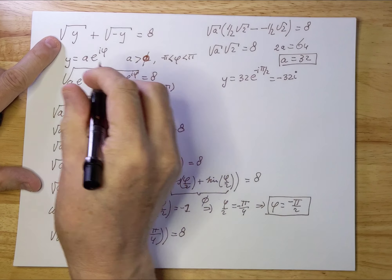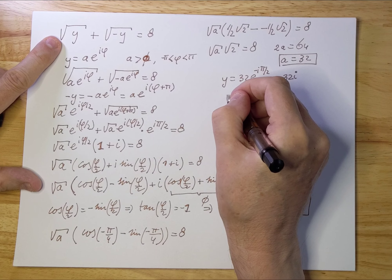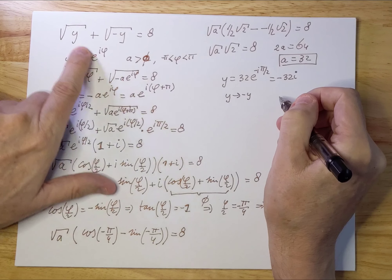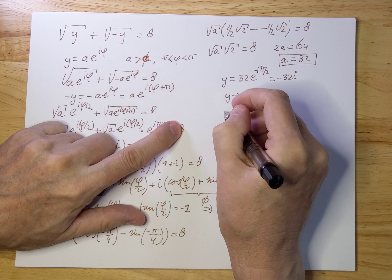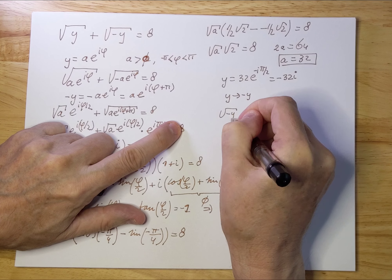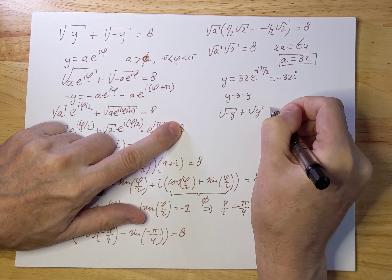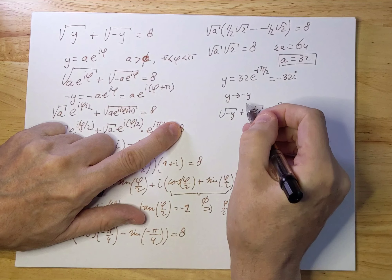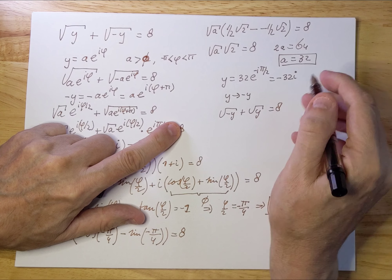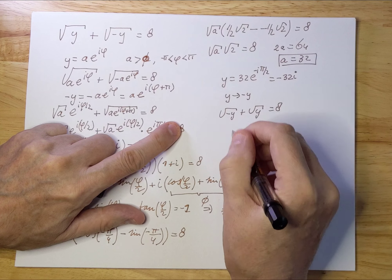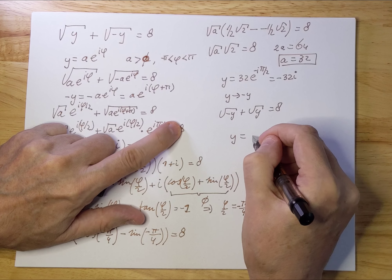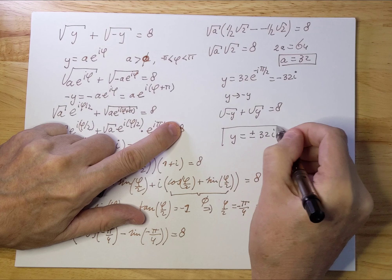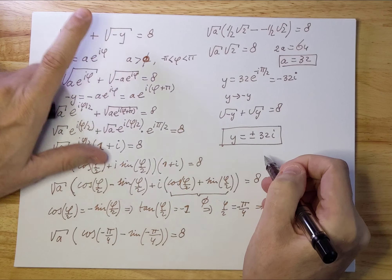Now let's look at the equation again. If we replace y with -y in this equation, we get √(-y) + √y = 8, which is the same equation. So there's also a solution y = 32i. The two solutions are ±32i.